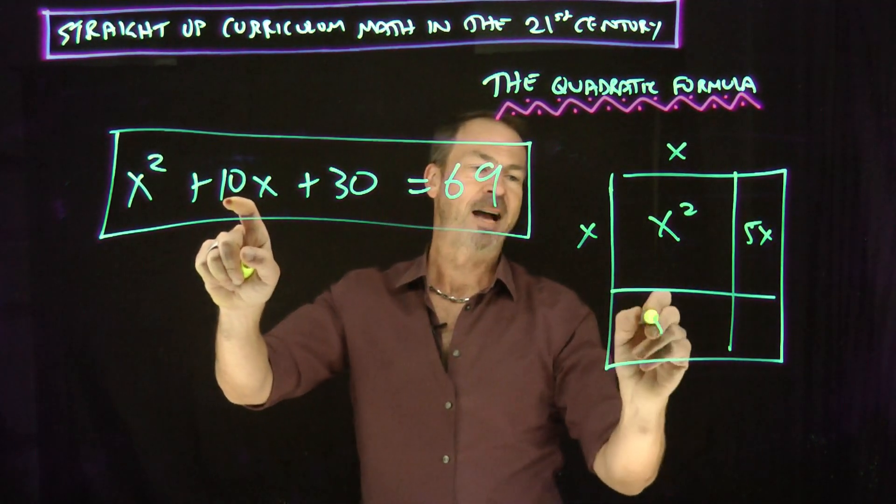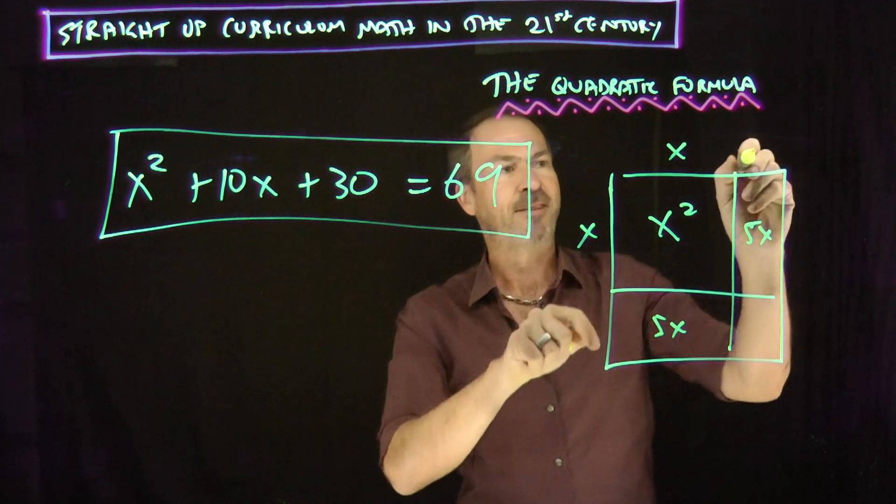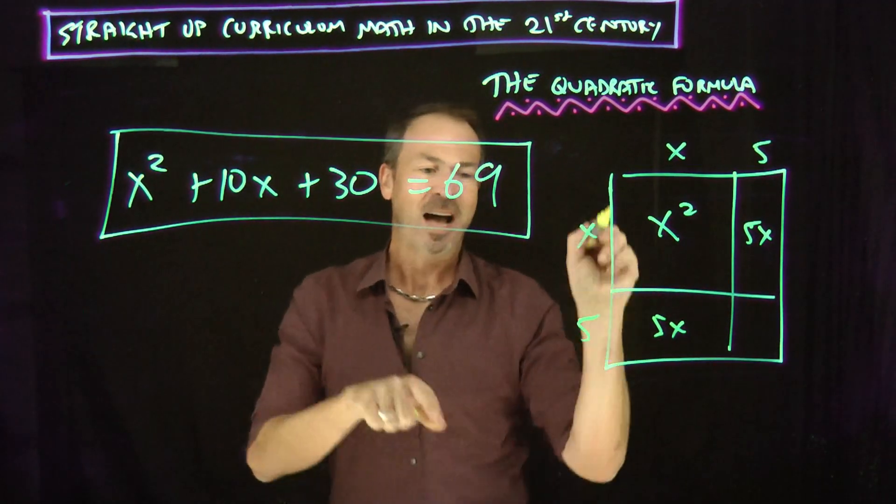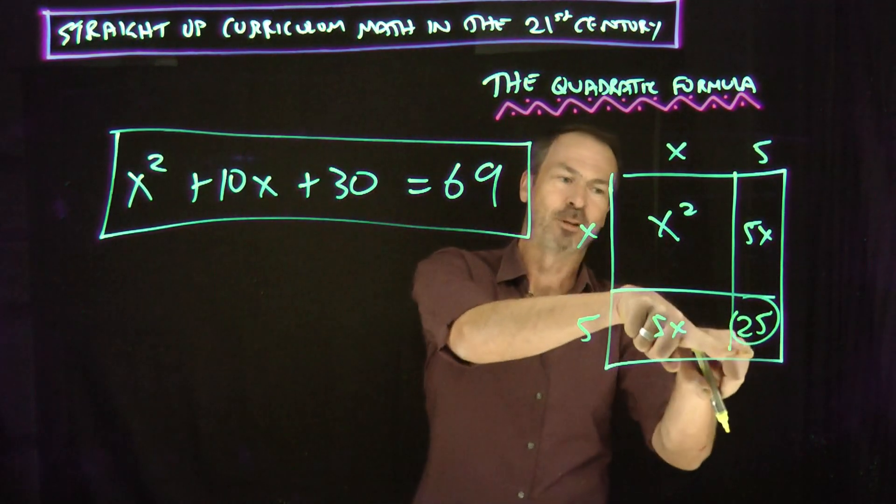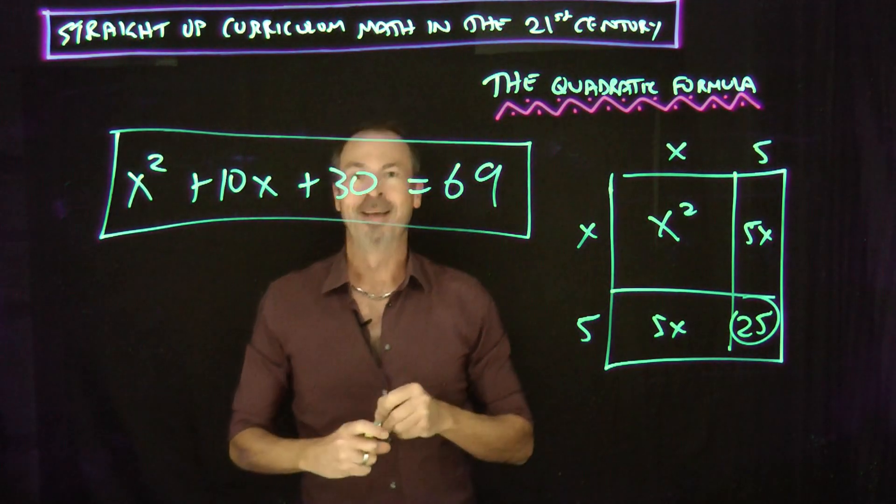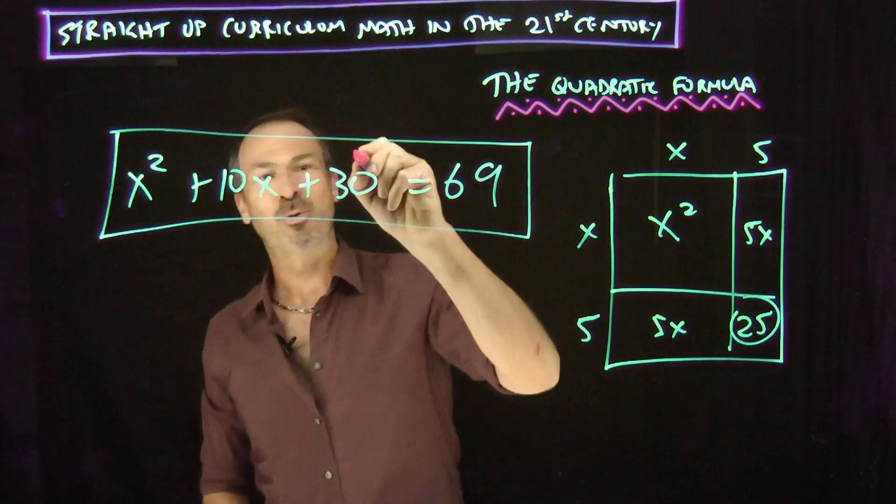There's an x squared piece from x times x. There's a 10x piece split symmetrically to 5x and 5x. Something times x is 5x. 5. Something times x is 5x. 5. That means that's 25. There's a mismatch. It wants 25. The math wants 25. I've got 30. I'm not perturbed.